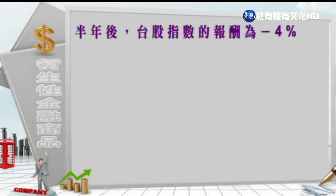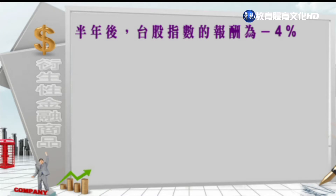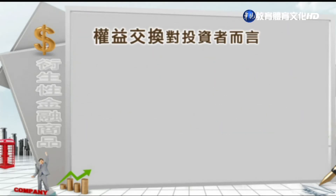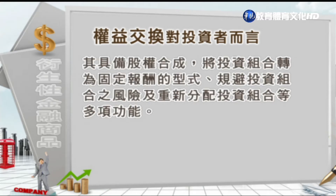在假设半年后台股指数的报酬变成-4%，因为指数报酬是负的，甲公司不但不需要付任何钱给乙公司，反而可以从乙这边得到4000万。乙公司依旧还是可以从甲这边拿到固定的4%乘以10亿元，也就是4000万；但因为指数为负，甲公司的总利得就是8000万。从以上这个例子就可以知道，权益交换对投资者而言，具备了股权的合成，把投资组合转换成固定报酬的形式，规避投资组合的风险，以及重新分配投资组合等多项功能。可以让持有股票投资组合的一方，即使遇到股价波动，还可以收取固定的报酬，享有稳定的收益来源，可以规避指数下跌的风险。